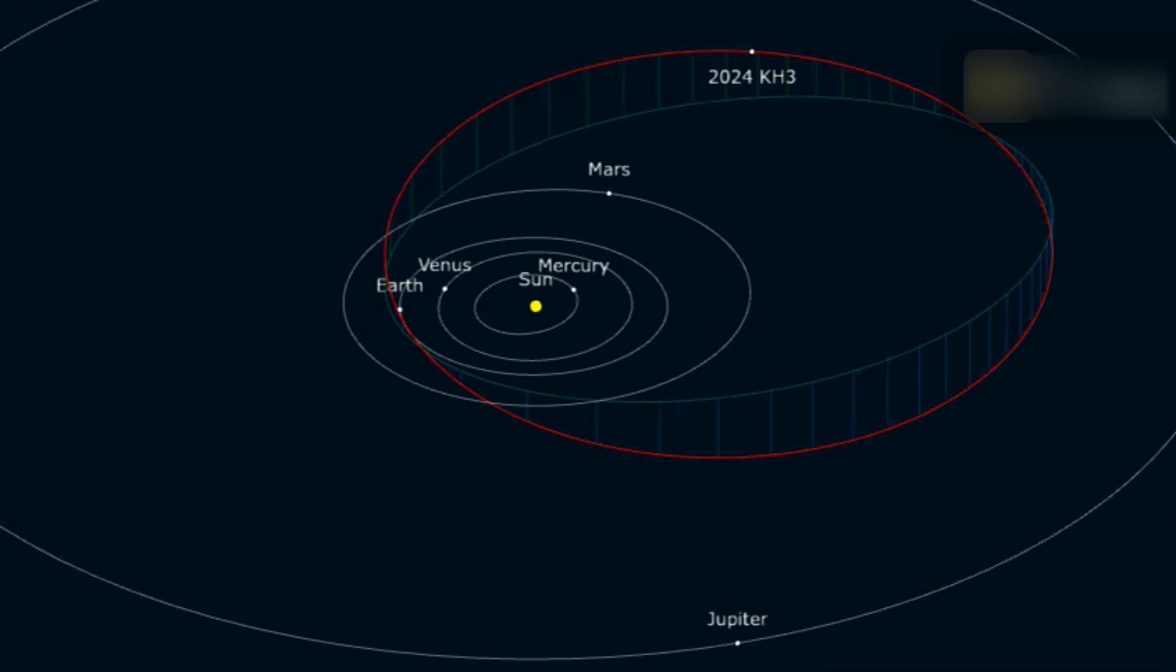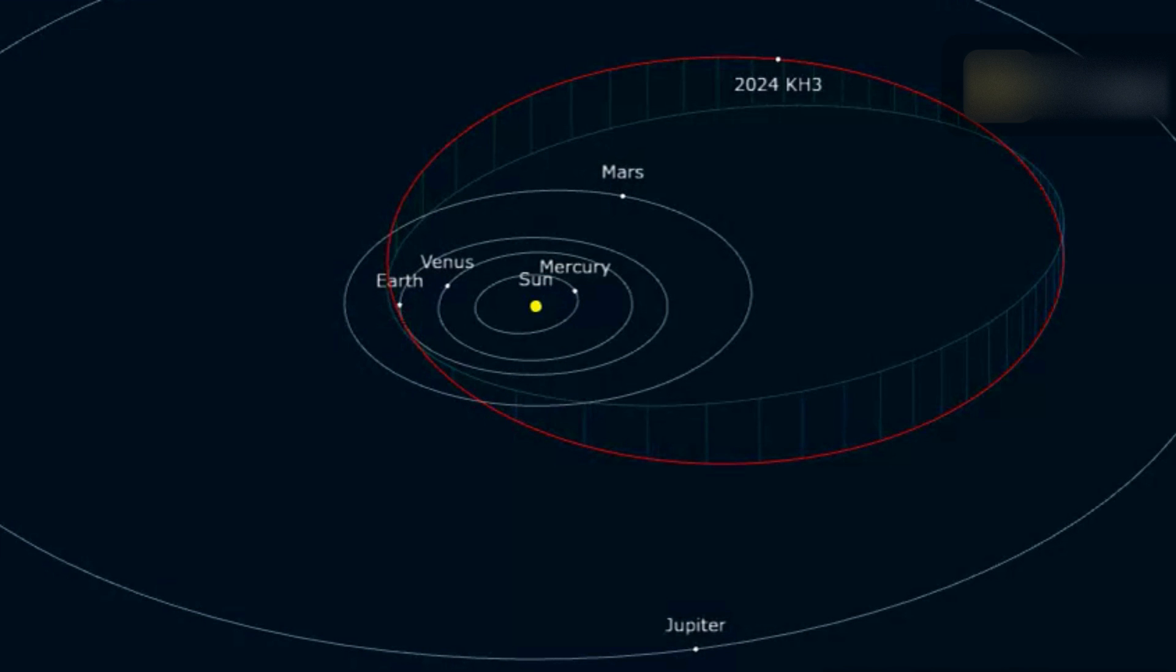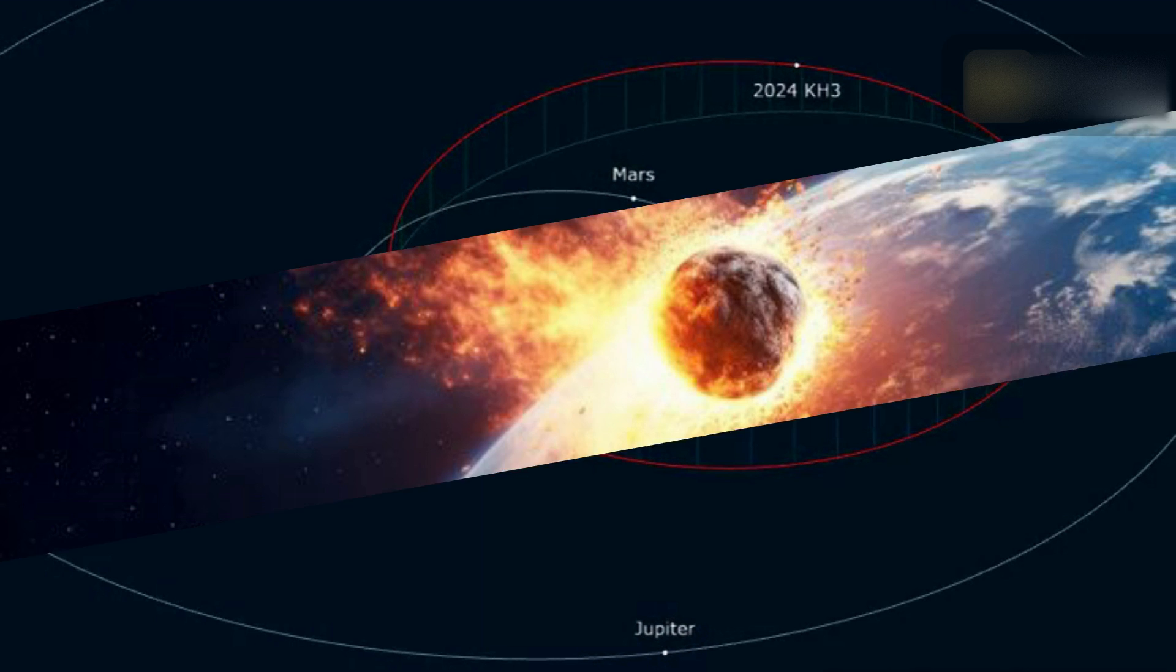This year, asteroid 2024 KH3 will pass Earth on August 10 at a distance of about 5.58 million kilometers and a speed of 11 kilometers per second.